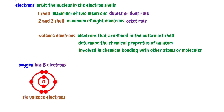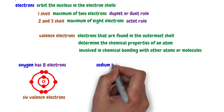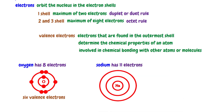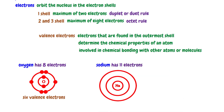Another example. Sodium has eleven electrons. Two electrons are found in the first shell, leaving nine electrons. The second shell can contain up to eight electrons, so the second shell takes up eight electrons, leaving one electron. The lone electron is found in the third shell. Sodium has one valence electron.